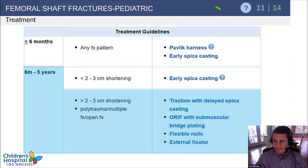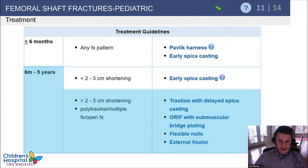The most important thing is to know the fracture has more shortening: when you apply the cast, follow closely and be ready to change treatment at the first follow-up visit. Other indications for options other than spica cast include polytrauma, multiple fractures, and open fractures. Those options are submuscular plates, flexible nails, external fixators, and sometimes traction with delayed spica casting.